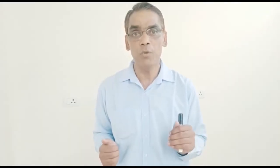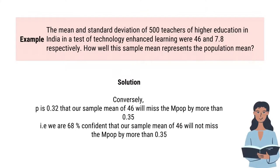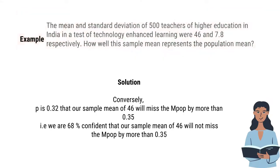This is the level of confidence, the level of probability. Probability is 0.68 that our sample mean of 46 will not miss the population mean by 0.35. Probability is 0.32 that our sample mean of 46 will miss the population mean by more than 0.35. That is, we are 68% confident that our sample mean 46 will not miss the population mean by more than 0.35. This is Case 1.